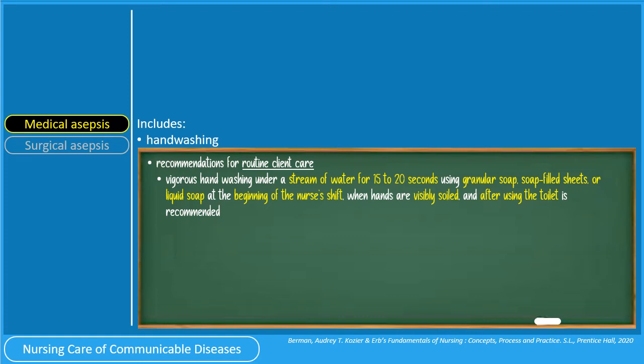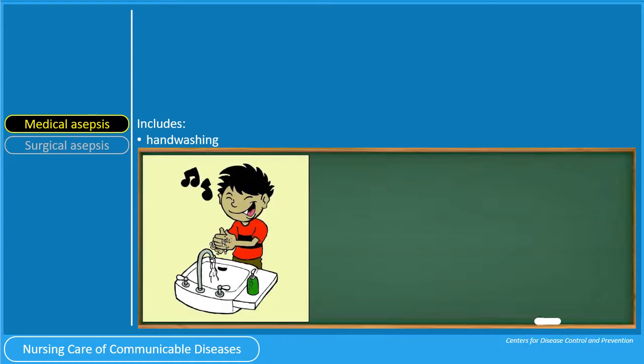What are the hand washing recommendations for routine client care? Vigorous hand washing under a stream of water for 15 to 20 seconds using granular soap, soap-filled sheets, or liquid soap — at the beginning of the nurse's shift, when the hands are visibly soiled, and after using the toilet — is recommended. The CDC suggests singing two sets of Happy Birthday to time the 15 to 20 seconds.